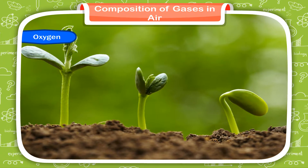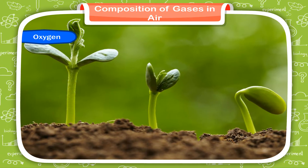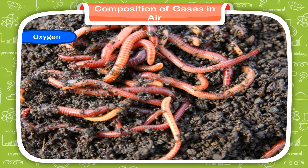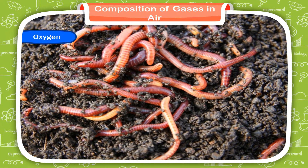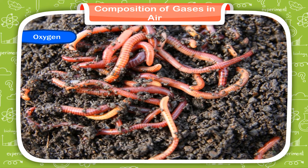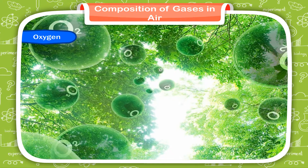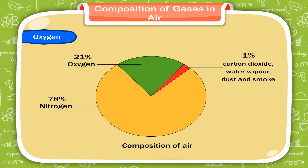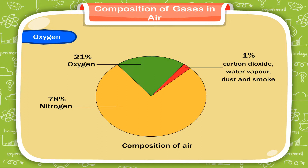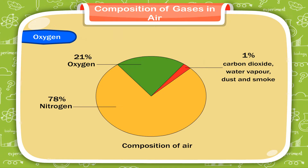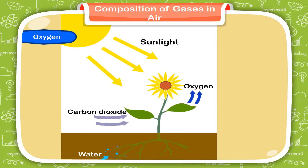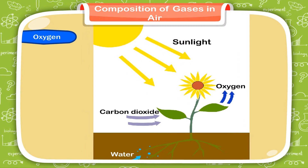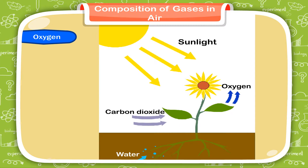Plants need air to grow as they take oxygen during respiration. The air is present between soil particles. The presence of air in soil can be shown by adding water to dry soil. You will notice some insects or earthworms moving in the soil. They take the air present in the soil for respiration. Thus, oxygen is also referred to as the life-giving gas. 21% of the air is oxygen. When we constantly take in oxygen, how is the balance maintained in the air? It is because of the plants. Plants give out oxygen during photosynthesis.